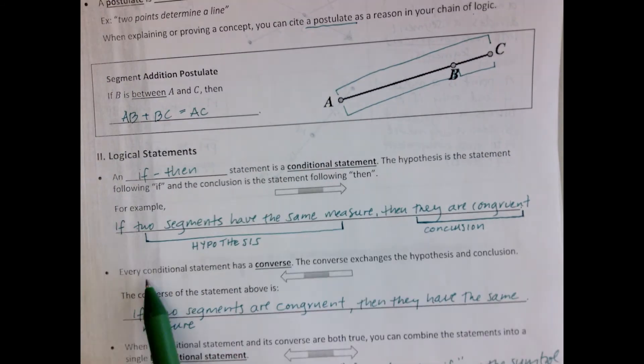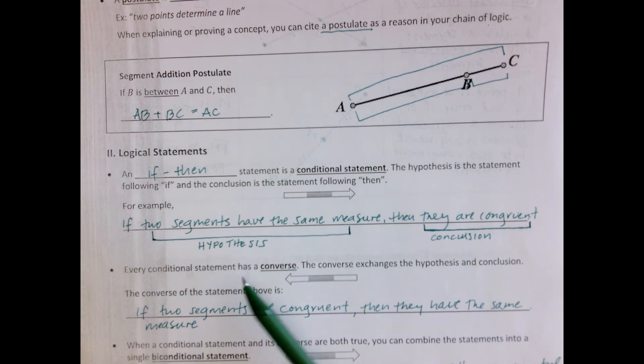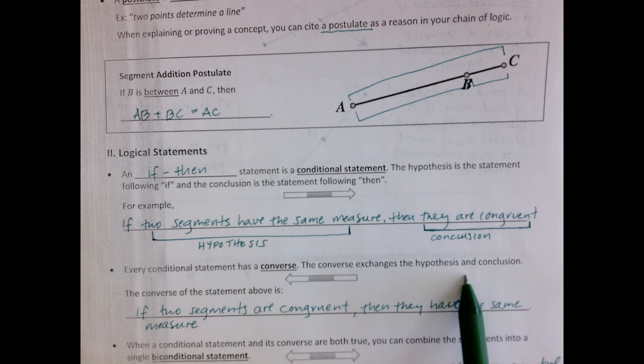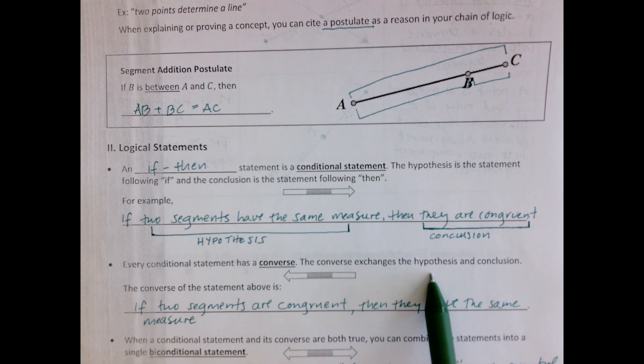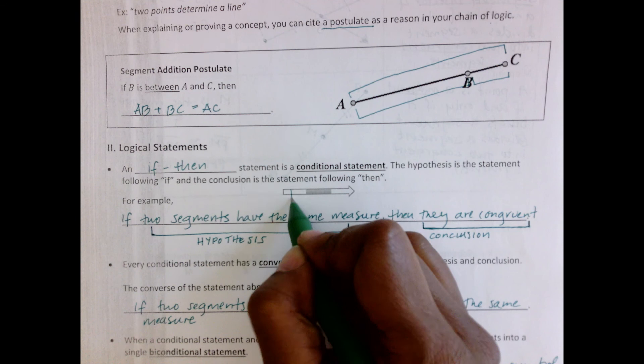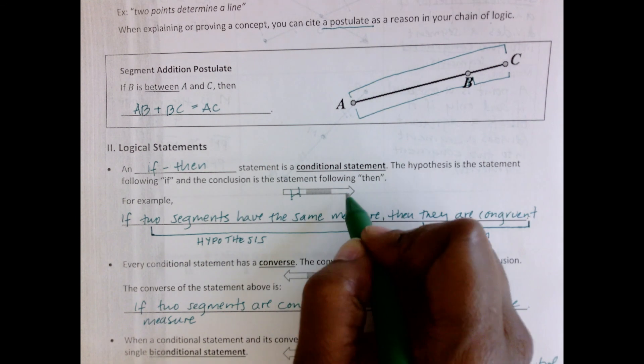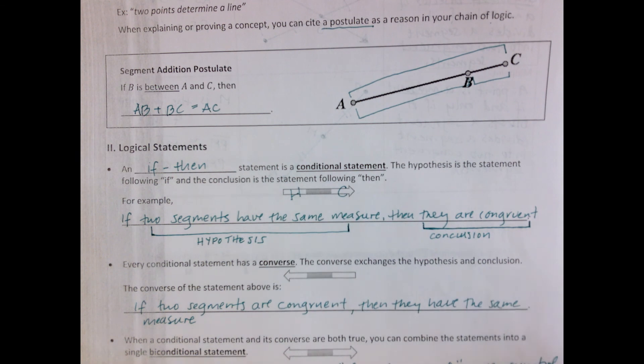Then there's also a converse, and every single conditional statement has a converse statement. And the converse exchanges the hypothesis and conclusion. So in this case, your hypothesis was here, and your conclusion was there, and it went from hypothesis to conclusion here. It's the opposite.